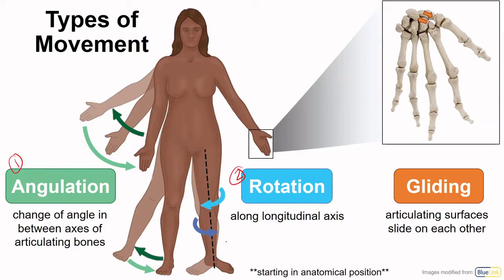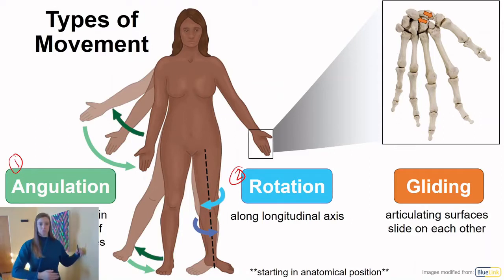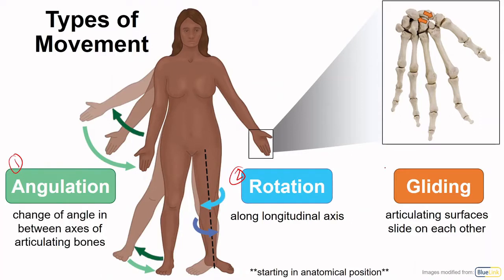Rotation refers to a long bone's axis — you can see an example of rotation at the shoulder. The last type of movement is much subtler: gliding movements. If one bone is gliding on another it might not be readily apparent. This takes place in the wrist or in the ankle.